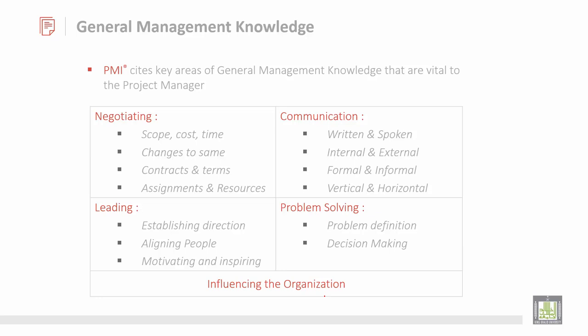Then we have general management knowledge, which can be broadly divided into four key areas: negotiating, communication, leading, and problem solving. Negotiating talks about scope, importance, then cost, then time, and changes. If there are some changes in the project — then contracts and terms, like how many validity of that, and also the legal issues. Contract terms and legal issues are very, very important.